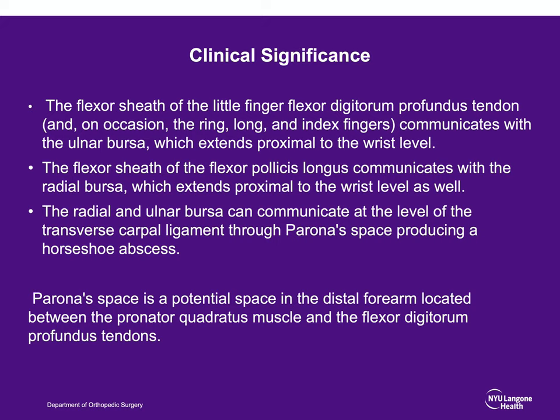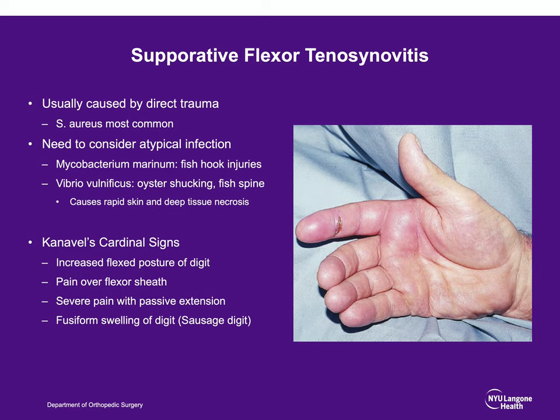80% of the time there is a communication of the radial and ulnar bursa, which can form a horseshoe abscess and communicate through Parona's space, which is between the flexor digitorum profundus tendons and the pronator quadratus. Septic or pyogenic flexor tenosynovitis is usually caused by direct trauma. You need to consider atypical infections in more chronic situations, particularly if there is a history of marine activities. Mycobacterium can be related to fishhook injuries, and Vibrio can be associated with oyster shucking and fish spines. Vibrio can be very aggressive and cause deep tissue necrosis.